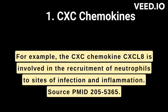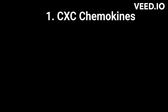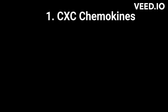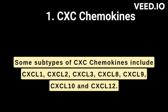Source: PMID 20553655. Other CXC chemokines, such as CXCL9 and CXCL10, are involved in the recruitment of T-cells to sites of inflammation, source PMID 24107403. Some subtypes of CXC chemokines include CXCL1, CXCL2, CXCL3, CXCL8, CXCL9, CXCL10, and CXCL12.